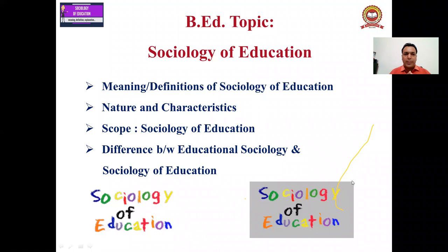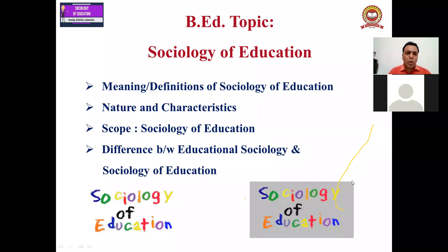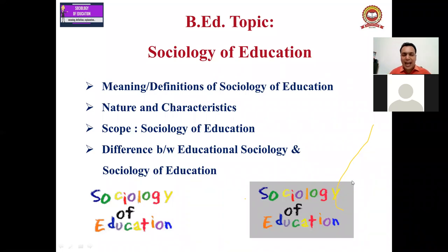Today we are going to discuss the topic: Sociology of Education. Under this topic, we will discuss the meaning and definitions of sociology of education. Then we will discuss about the nature and characteristics of sociology of education. Then we will discuss about the scope of sociology of education. And lastly, we will discuss about the difference between educational sociology and sociology of education. This is very important — it always comes in the exam as a short note question.